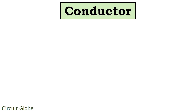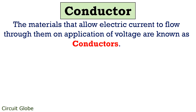Friends, conductors, semiconductors and insulators are the materials that are majorly classified according to the level of conductivity offered by them. In this video lecture we will understand on what factors the three are differentiated, but let's first see what are conductors.